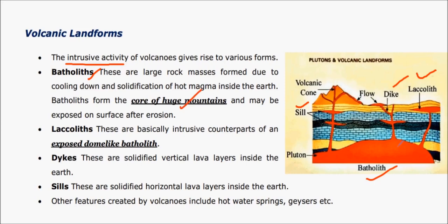The next one is laccolith, where magma rises to a certain level and forms an umbrella-shaped structure. When magma cools vertically, such rock is called a dike, and if it cools horizontally, it is called a sill. Also, hot volcanoes give rise to hot water springs, geysers, etc.